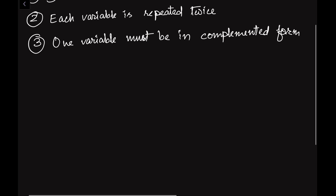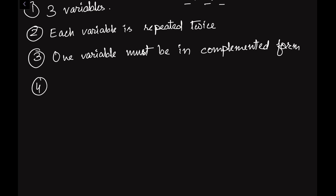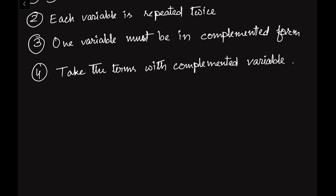The fourth step: if conditions 1, 2, and 3 are fulfilled, we take the terms containing the complemented variable. If A is the complemented variable, we keep all terms having A. If B is complemented, we keep all terms with B. We discard the remaining term that does not contain the complemented variable.